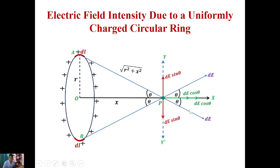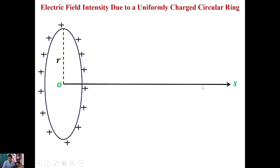In this class we are going to discuss the electric field intensity due to a uniformly charged circular ring. We have to find out the electric field intensity at any arbitrary point placed on its axis, or along the x-axis. Consider a circular ring having center at O, radius R, and uniformly charged. We have to find the electric field intensity at point P, which is at a distance x from the center.